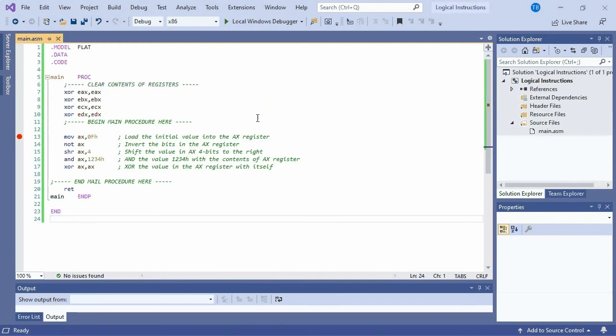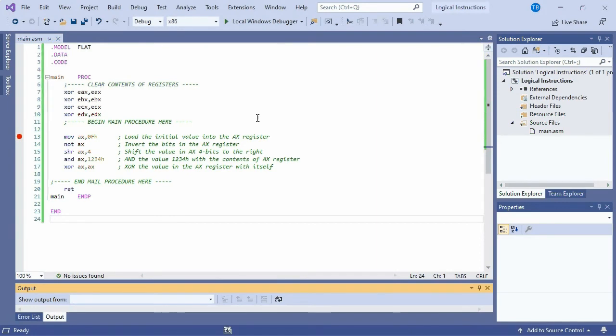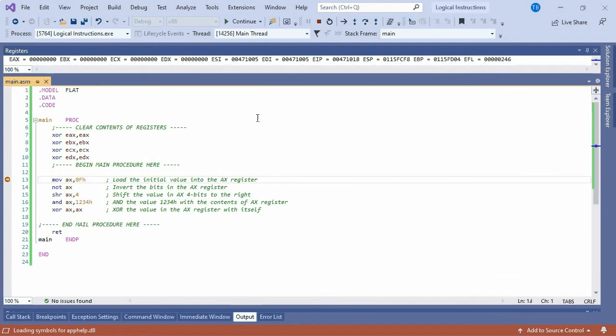The first instruction, move AX comma 0F hex, as expected, places the value 0F into the AX register.